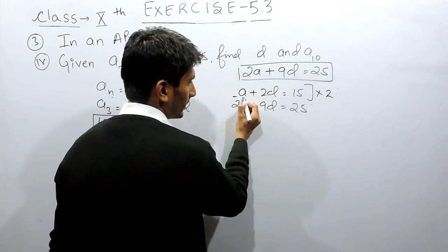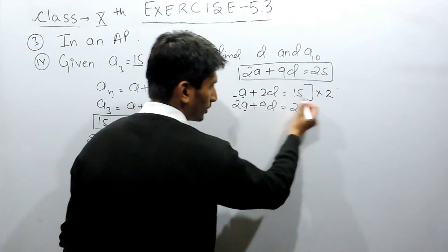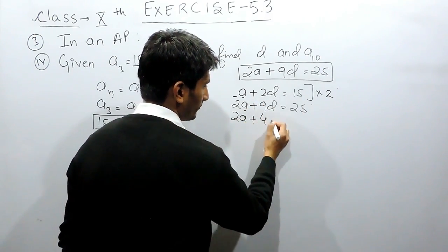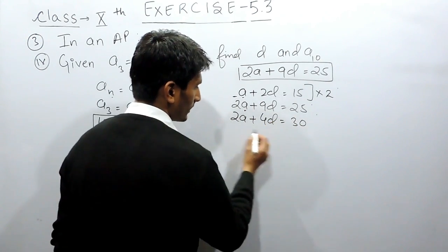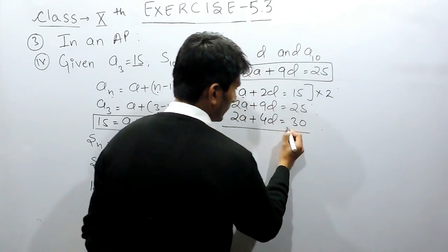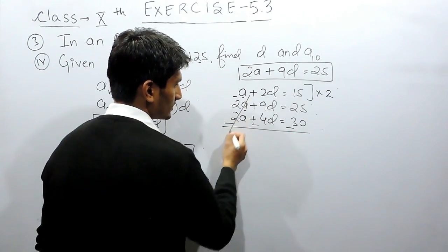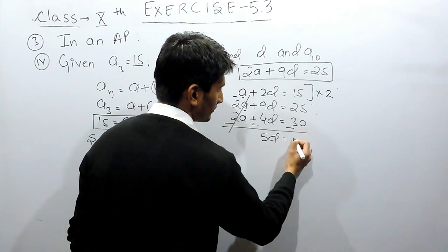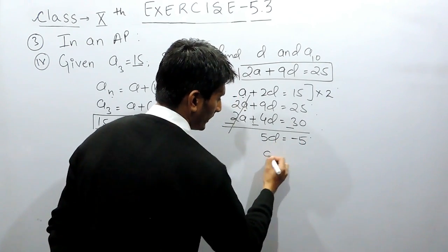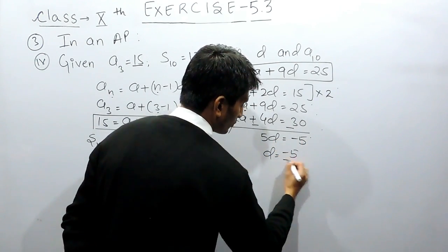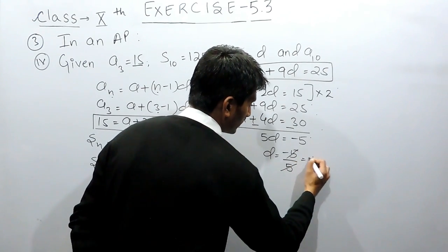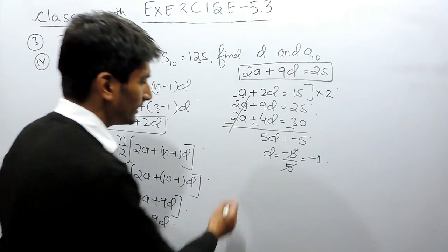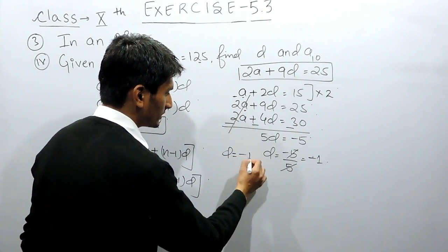Multiplying equation 1 by 2 gives us 2a + 4d = 30. Subtracting equation 2 from this, the 2a terms cancel out, leaving 4d - 9d = 30 - 25, which gives 5d = -5, so d = -1. The common difference is -1.